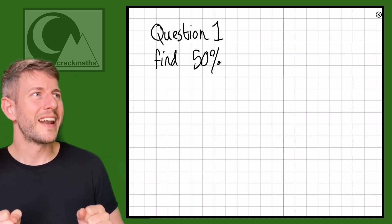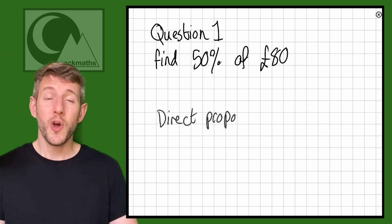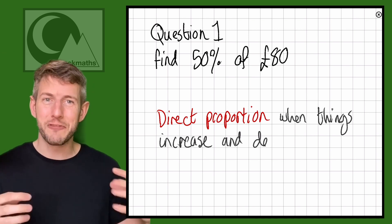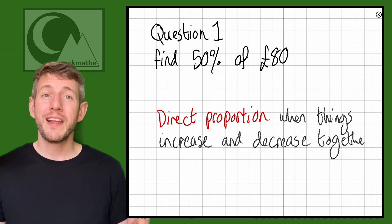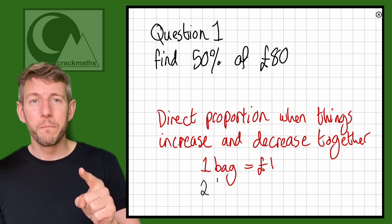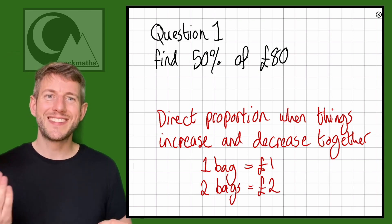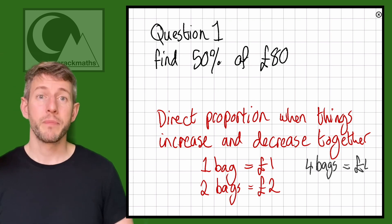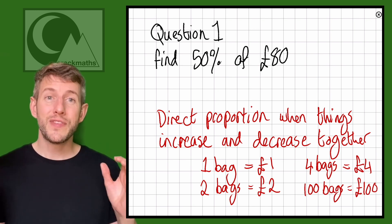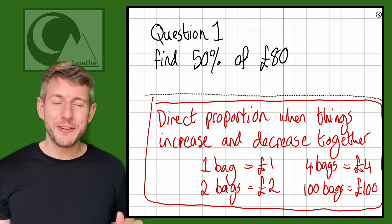Here we have question one on the board: find 50% of 80 pounds. Direct proportion is when we know that certain amounts equal other amounts, and they increase and decrease together. For example, if one bag of crisps costs one pound, then two bags costs two pounds, four bags costs four pounds, a hundred bags costs a hundred pounds. Everything increases and decreases at the same rate.